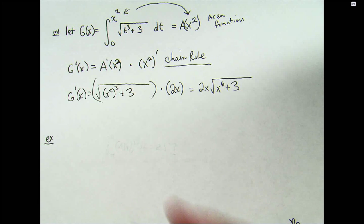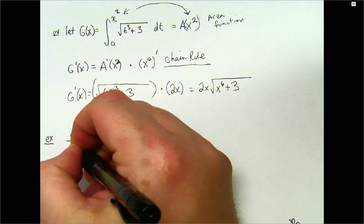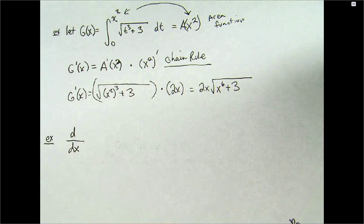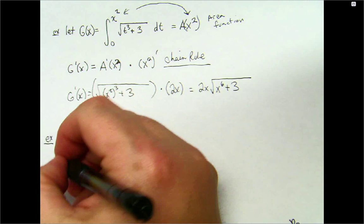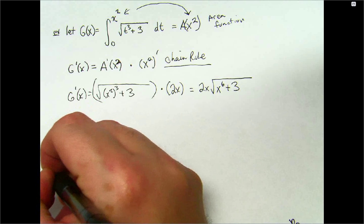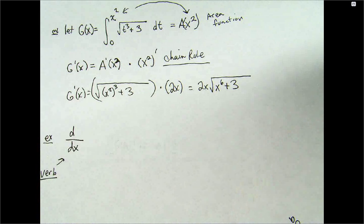This pops up a few times on the AP exam, so you've got to know how to do this. You might see it like this. What does that mean? Yeah. This is a verb. Just to let you know, it's a verb. It's an action word. It tells you you've got to do something. So, we're going to take a derivative.